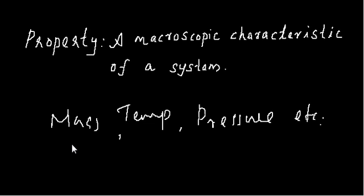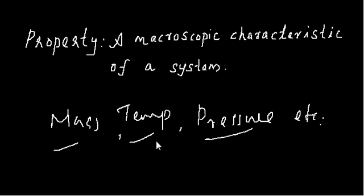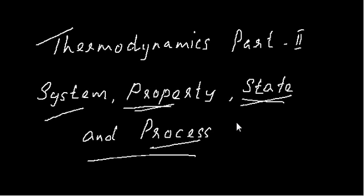For example, you can assign a mass of 10 kg to a system — that's a numerical value you can assign at any time. If you are studying 5 liters of water, you can assign a temperature of 25 degrees Celsius and a pressure of 1 bar. These values can be assigned a numerical value at any given point in time, and those numerical values define the state of a system. When there is a change in these values, we say the system changes its state.